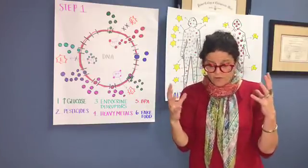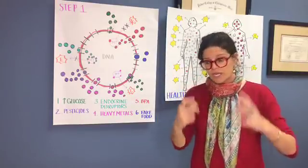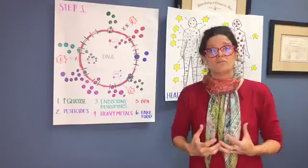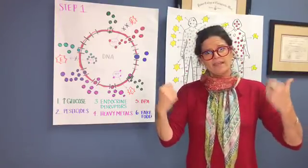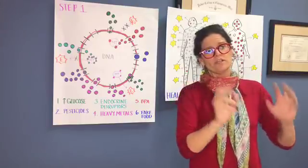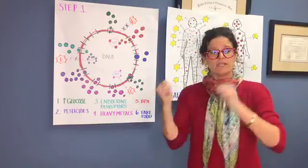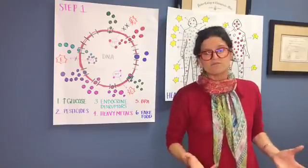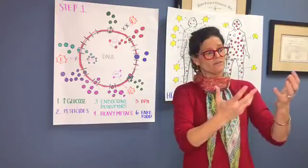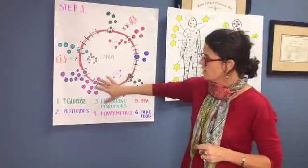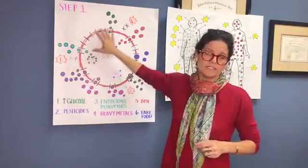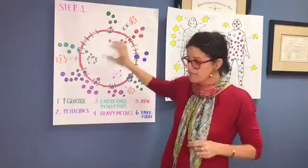And then the other piece that blocks these receptor sites is fake food. Fake food is like your chips, your Doritos, your processed meats with nitrates in it. Anything I say that you could leave in your pantry, go on a vacation for a couple weeks and come back, if it's still fresh and appetizing, it's either a dead food or it's a fake food. Fake food is getting caught in these receptor sites making cells sick.